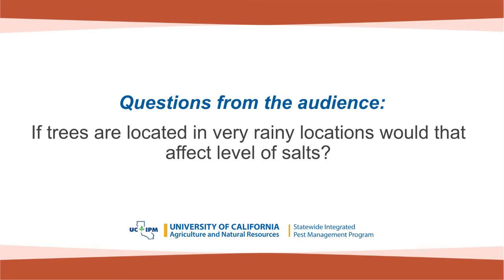Q: If trees are in very rainy locations, would that affect the level of salts? Thank goodness for rain — but also thank goodness we don't have rain, because almost all the diseases we have in California are soil-borne. If you go to a rain-fed environment like New Zealand, they're dealing with fruit and leaf diseases and are spraying copper and all kinds of fungicides. They don't have salt problems, but they've got a lot of other problems. This is an issue wherever Mediterranean agriculture exists — in Chile, Australia, Spain, Turkey, Egypt, Israel. We're fighting salts all the time, but we don't have most of the fruit diseases requiring fungicides that they have in New Zealand and South Africa.